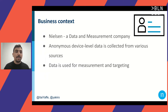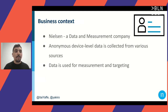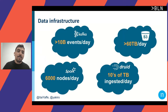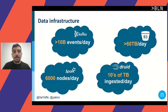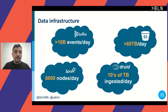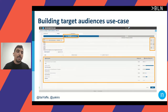For business context: Nielsen is a data and measurement company. We collect data from various online and offline sources at the device or person level. The data infrastructure supporting this is quite extensive — we process 10 billion events daily in our Kafka cluster, store more than 60 terabytes per day on S3, have more than 5 petabytes in our data lake, run more than 6,000 Spark nodes every day, and ingest tens of terabytes of data into Druid on a daily basis.